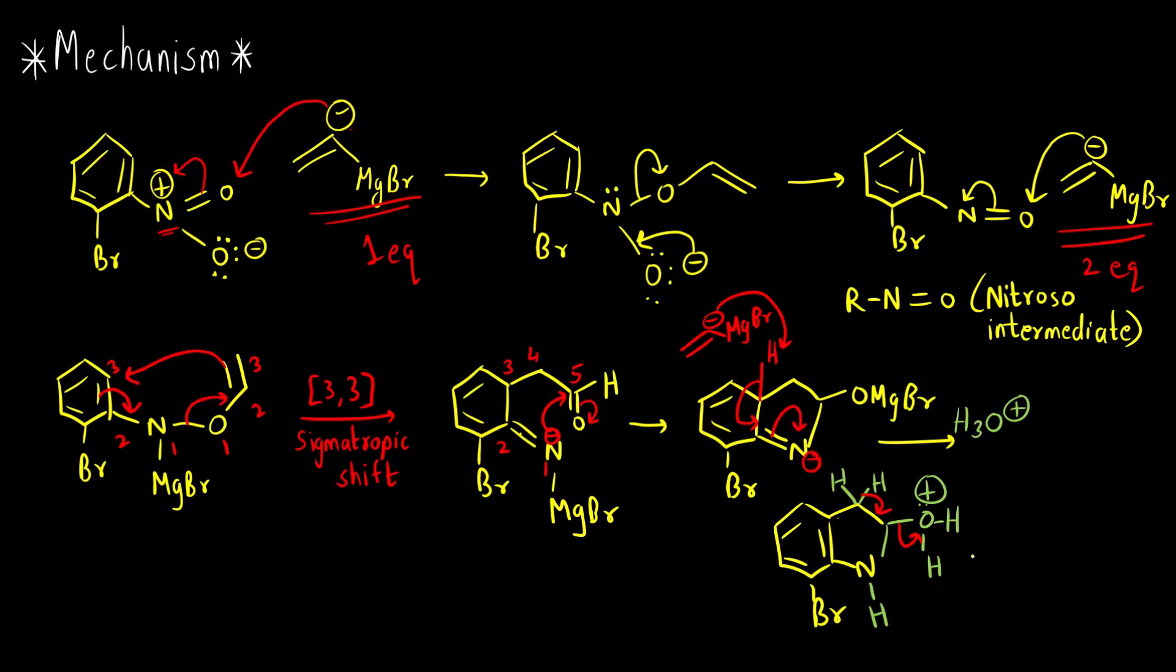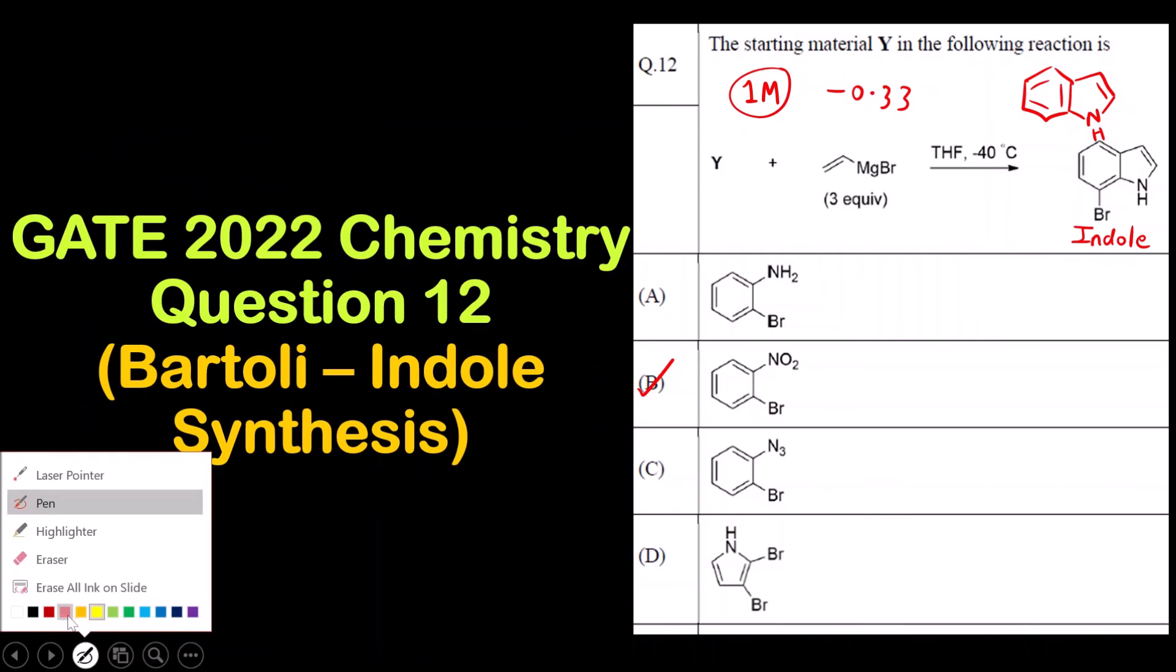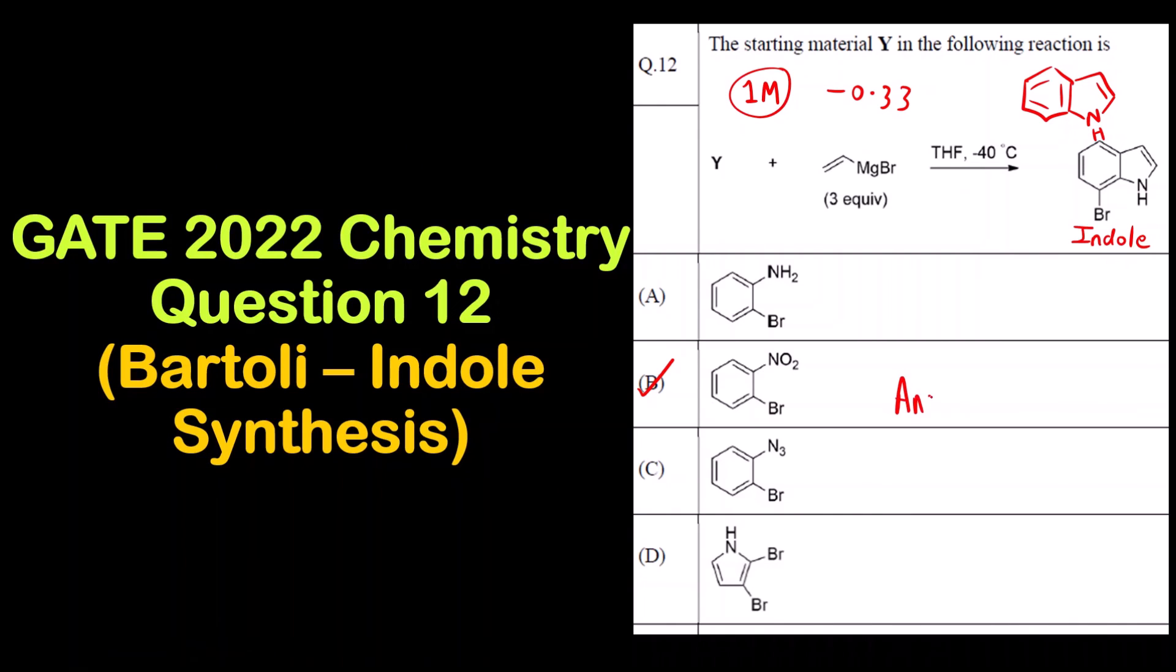What is the final product? Benzene Br, double bond N-H. Okay, this is the final product, that is the indole derivative that we are required. So what is the correct answer? Correct answer is option B.